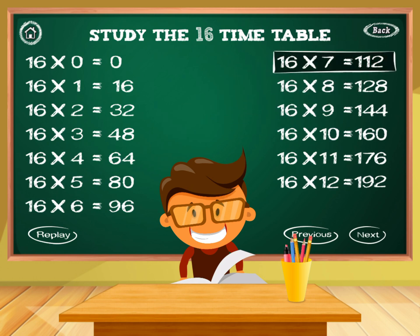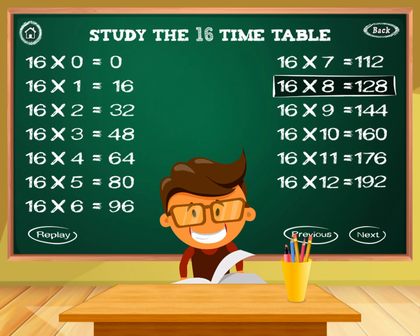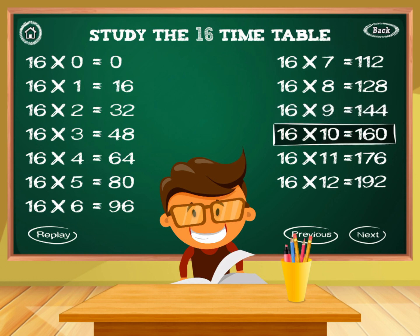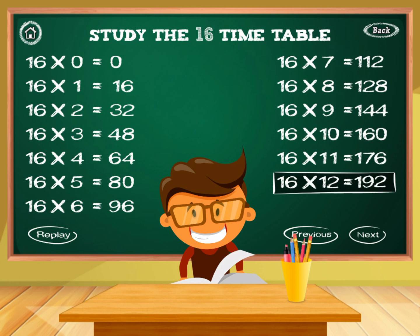16 times 7 equals 112. 16 times 8 equals 128. 16 times 9 equals 144. 16 times 10 equals 160. 16 times 11 equals 176. 16 times 12 equals 192.